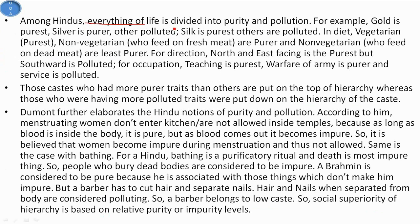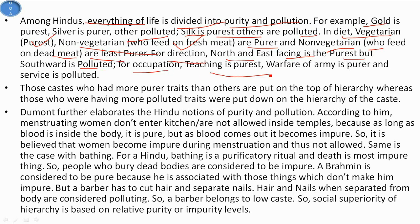Among Hindus, everything in life is divided into purity and pollution. For example, gold is the purest, silver is purer, and others are polluted. Similarly, silk is the purest fabric. In diet, vegetarians are the purest; non-vegetarians who feed on freshwater animals are purer; non-vegetarians who feed on dead meat are the least pure. For directions, north and east-facing is the purest but southward is polluted. For occupations, teaching is the purest, warfare is purer, and service is polluted.